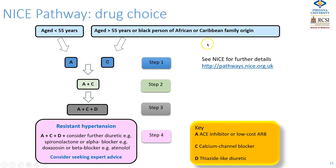What medication should you use? It depends on racial background. If the patient is aged under 55, you should start with an A drug — that is an ACE inhibitor or an angiotensin receptor blocker. If they are aged over 55, or are of African or Caribbean origin, you should start with a calcium channel blocker. This is step one of the NICE pathway.